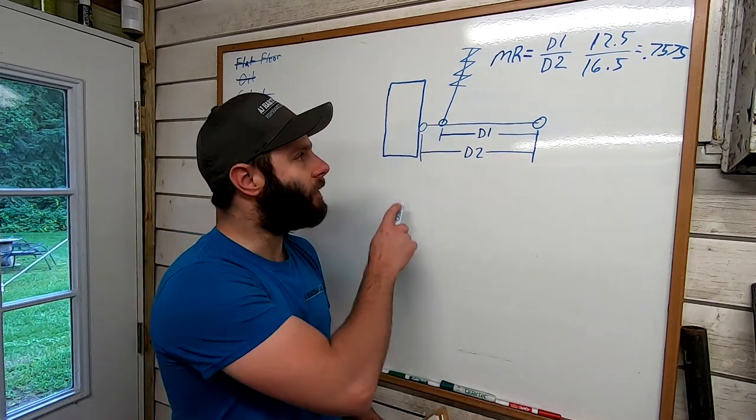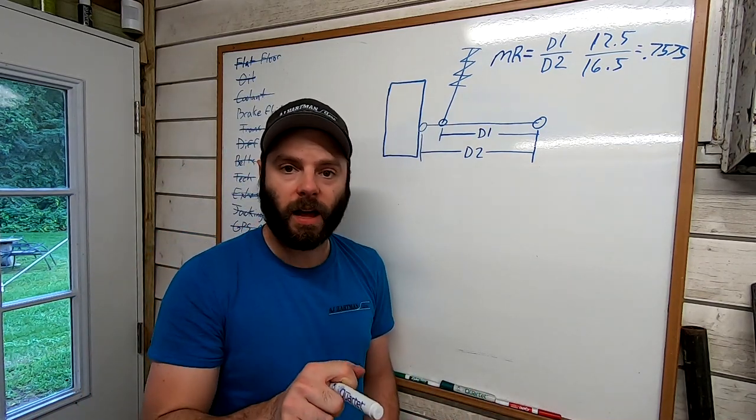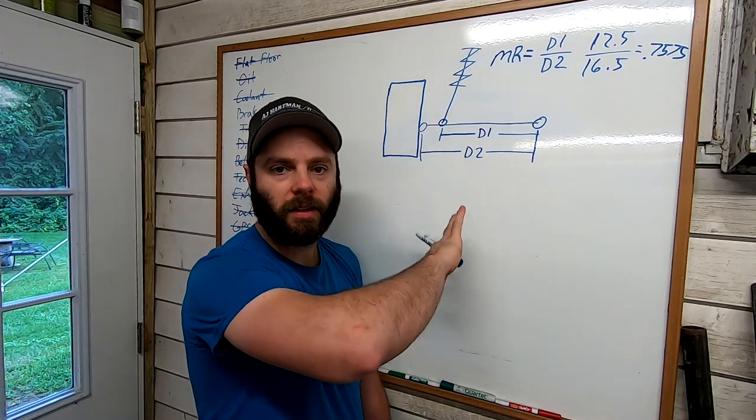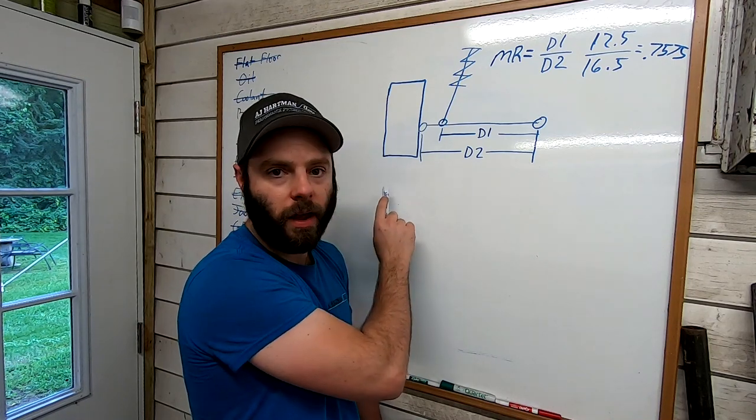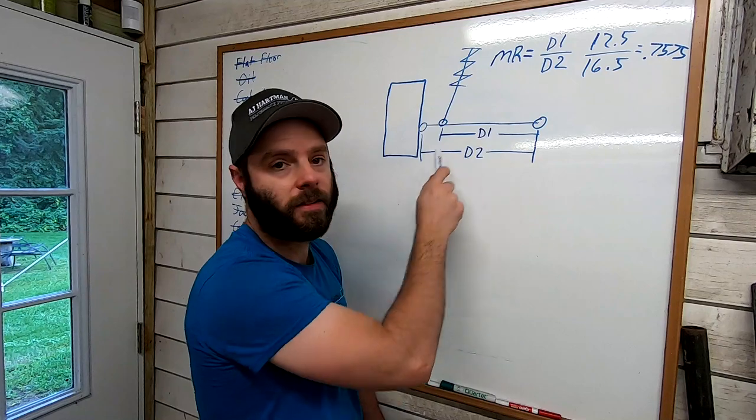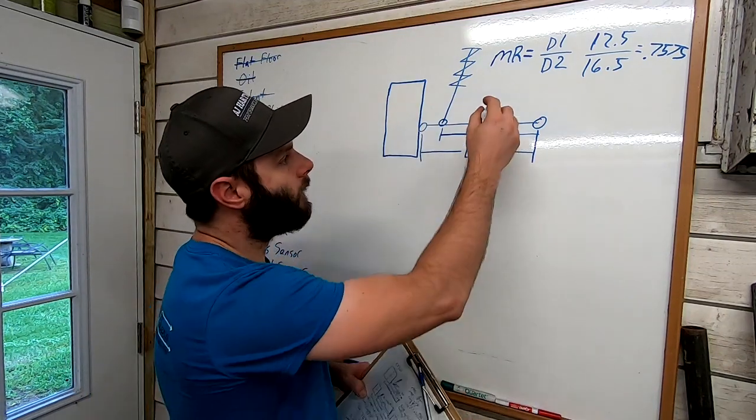Now in order to figure out the wheel rate, what we're going to do is use the spring rates that were on the solid axle just to run our numbers, then we can reorganize the equation to figure out the wheel rate and what springs we need on the IRS to get the wheel rate that we want.